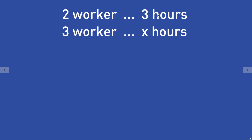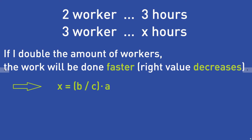So 2 workers need 3 hours for a job, and we want to know how much time 3 workers will need. We have to ask ourselves again: if we double the amount of workers — the left value A — will the right number, which describes the time they need to finish the work, increase or decrease? It will decrease, because the more workers we have, the faster the job will be done. So if we double the amount of workers, the right value decreases.